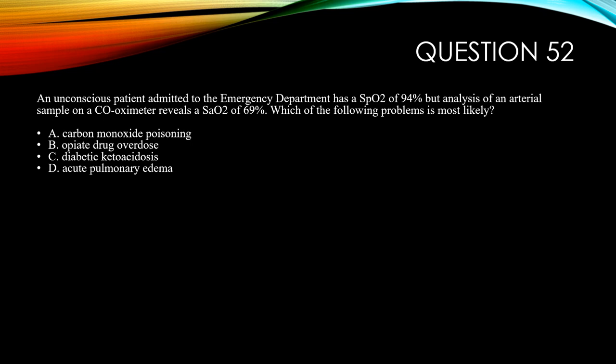Question 52. An unconscious patient submitted to the emergency department has an SpO2 of 94%, but analysis of an arterial sample on a co-oximeter reveals an SaO2 of 69%. Which of the following problems is most likely the issue? A, carbon monoxide poisoning. B, opiate drug overdose. C, diabetic ketoacidosis. Or D, acute pulmonary edema.